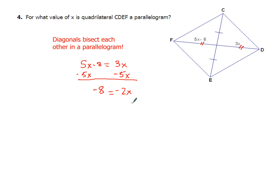What we want to do is divide both sides by negative 2, and we can easily see that we get a value of 4. That's all we had to do for that one.